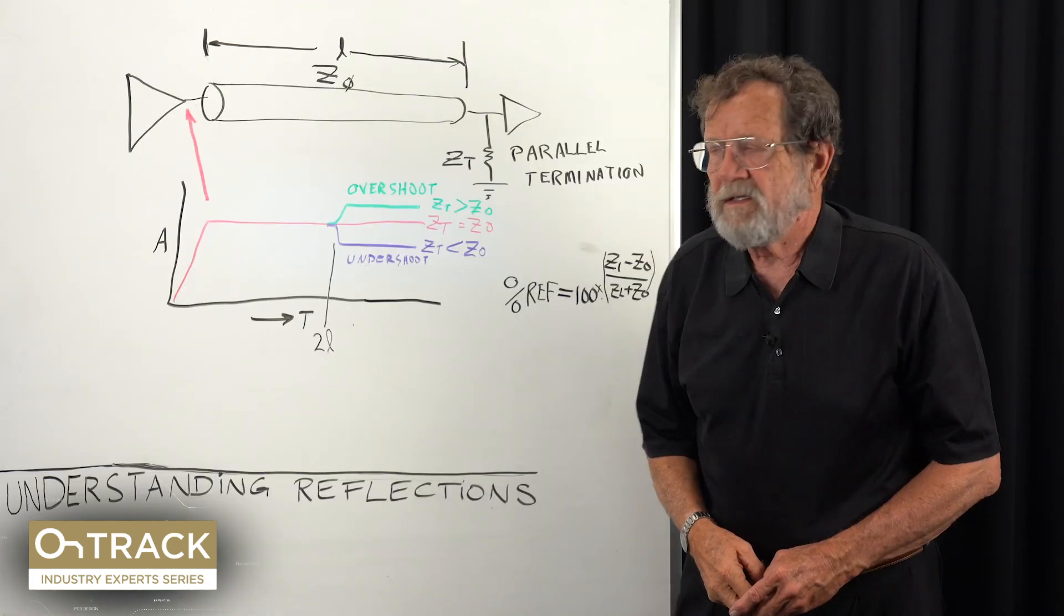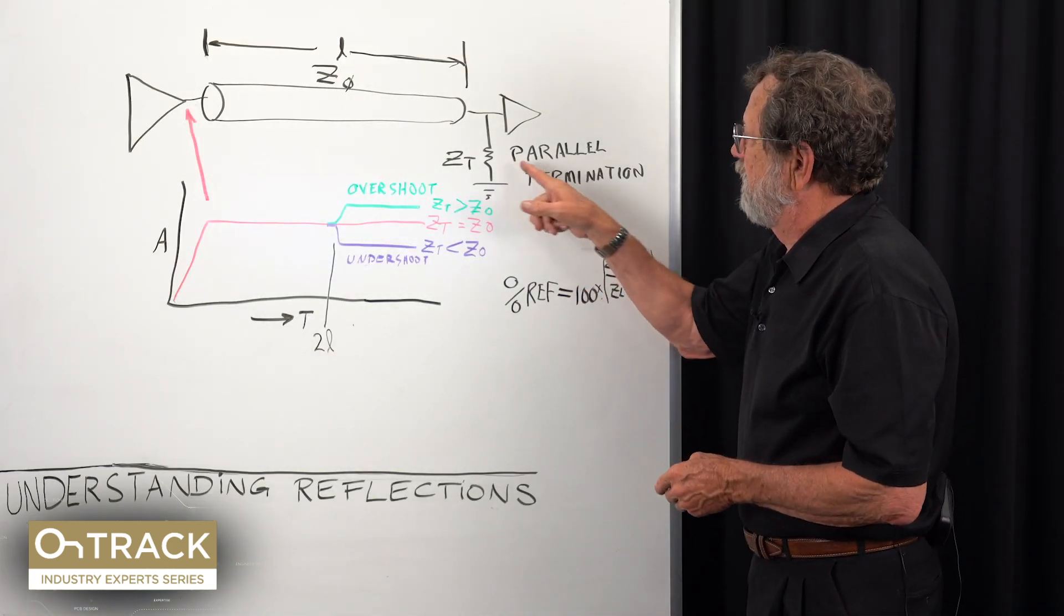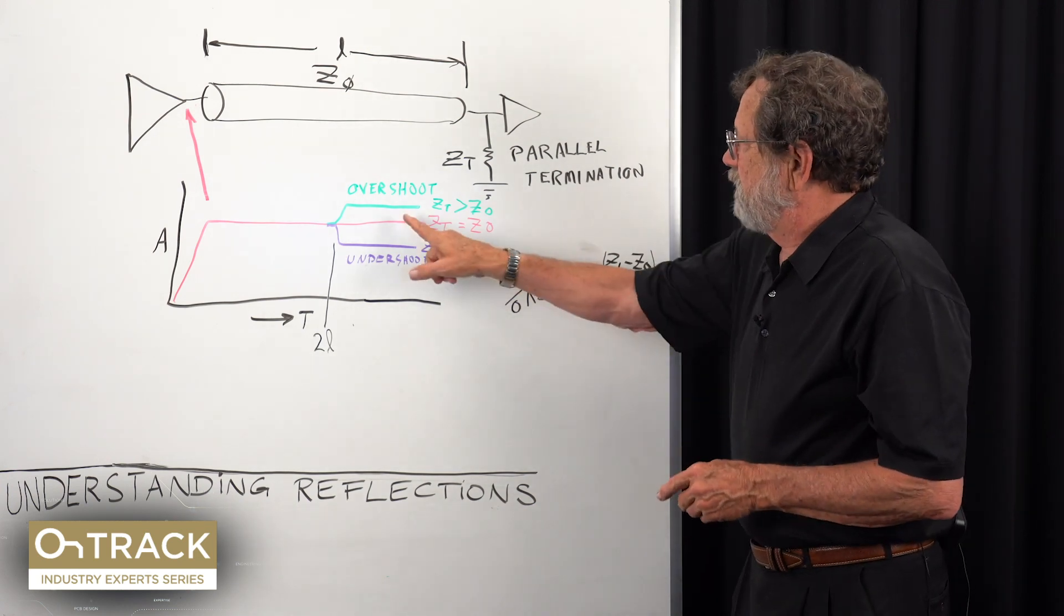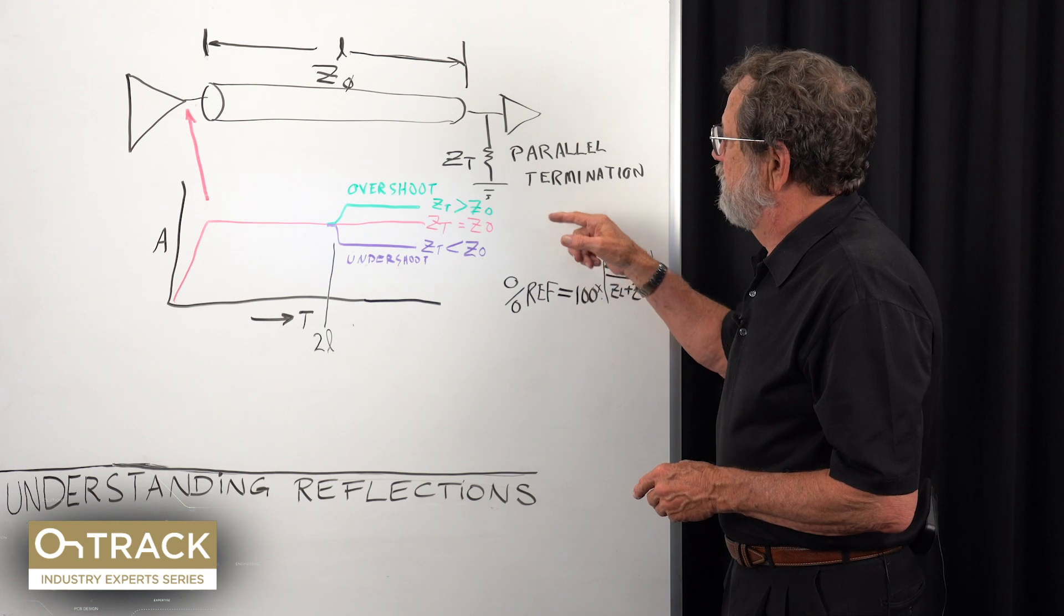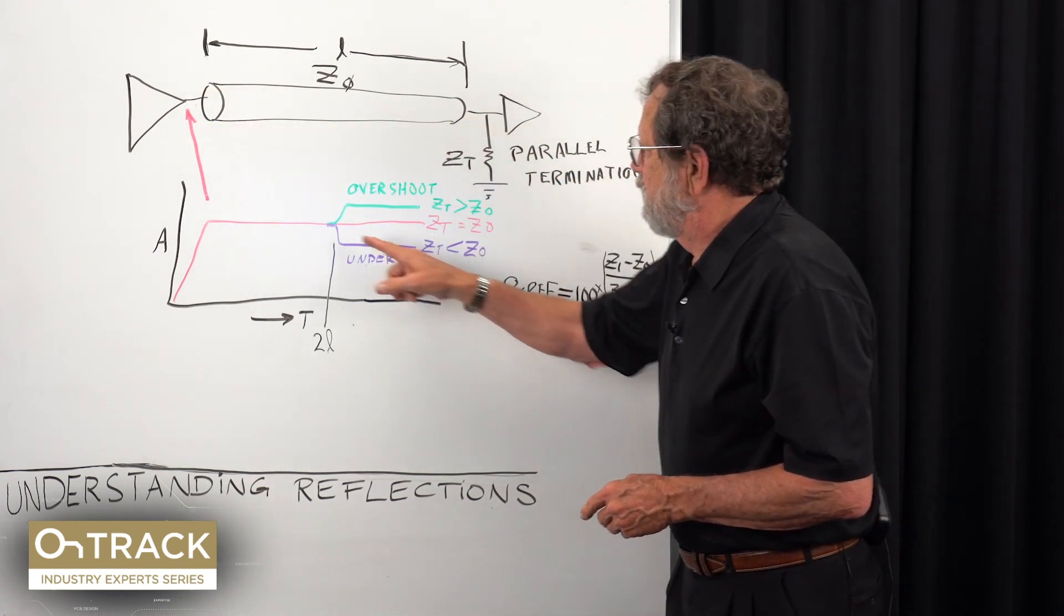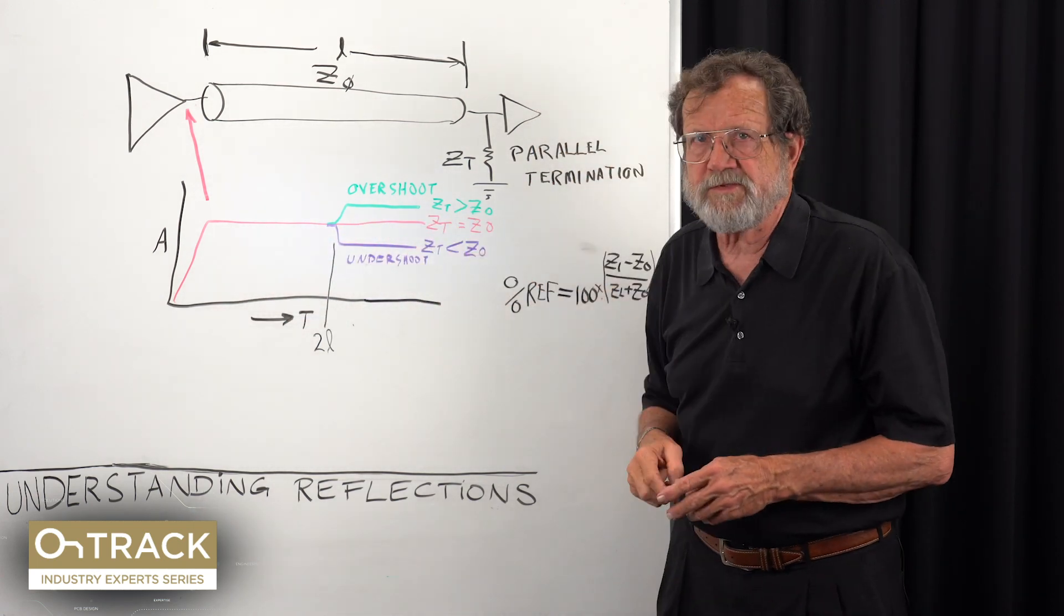The second case is if the terminator value is higher than line impedance—it's the green waveform. What you can see is we've got energy that did show up back here, and it's going in the same direction as the incident waveform. So the label for that is overshoot. It adds to the original waveform value.